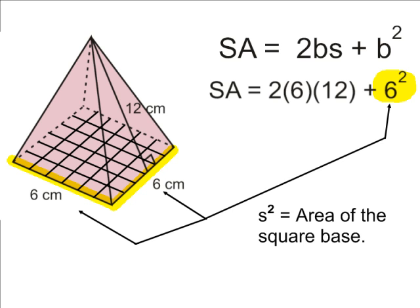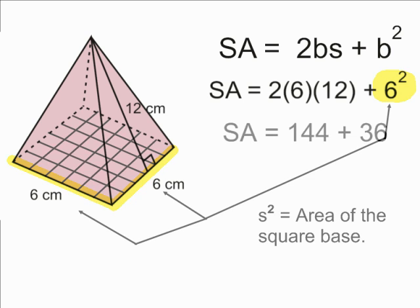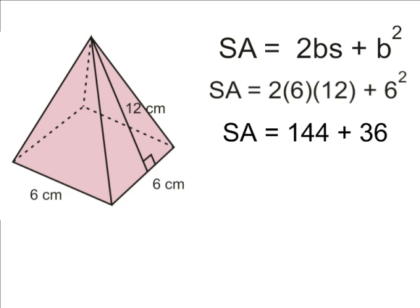Next, let's multiply all of the numbers to the left of our addition sign. 2 times 6 times 12 is 144. And after the addition sign, we are going to take 6 and raise that to the second power, which gives us 36.